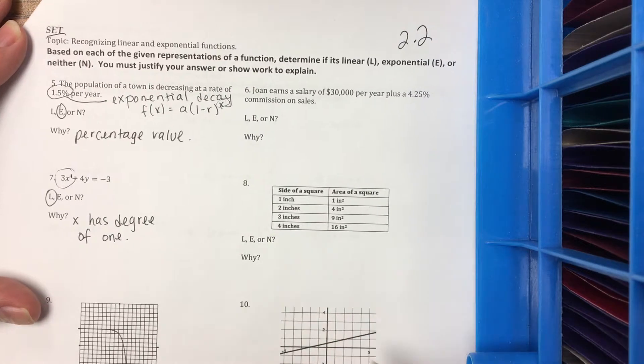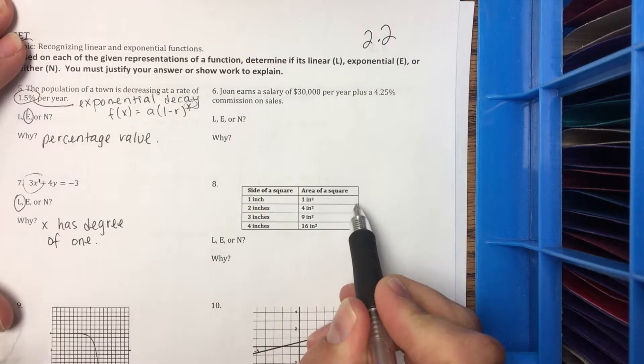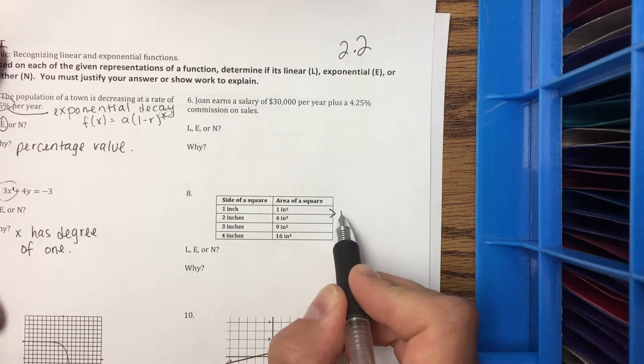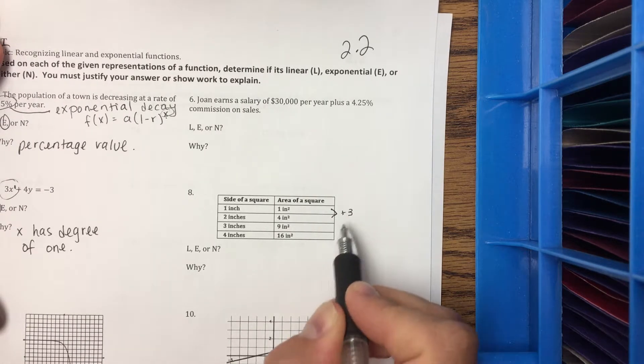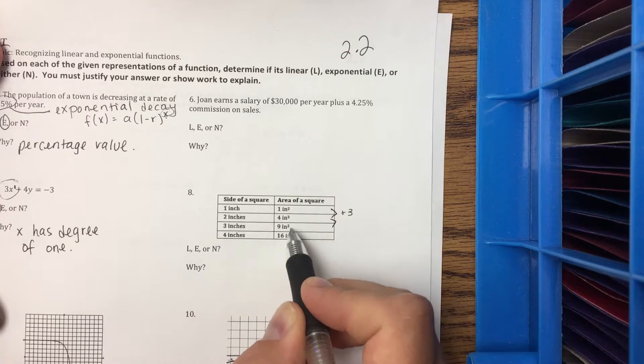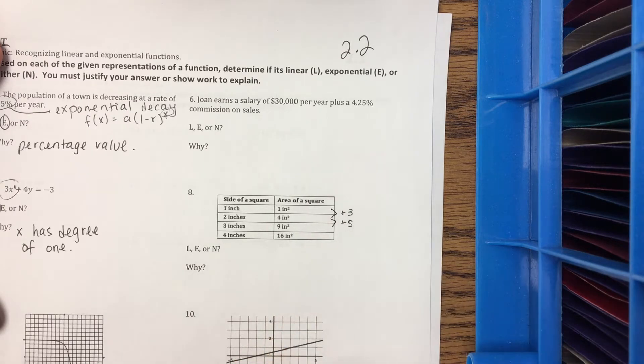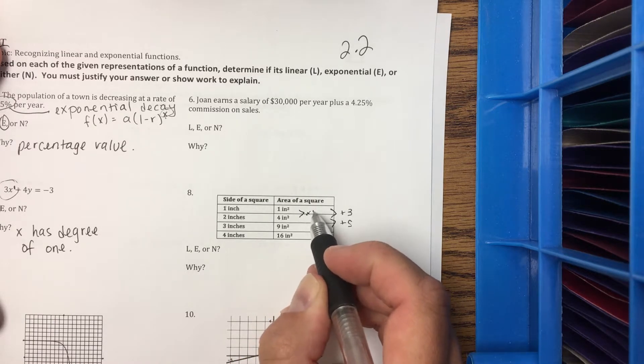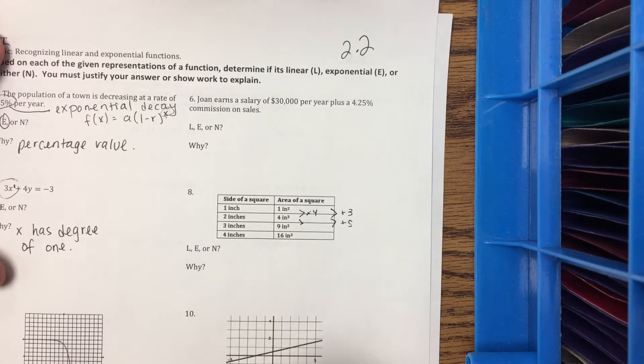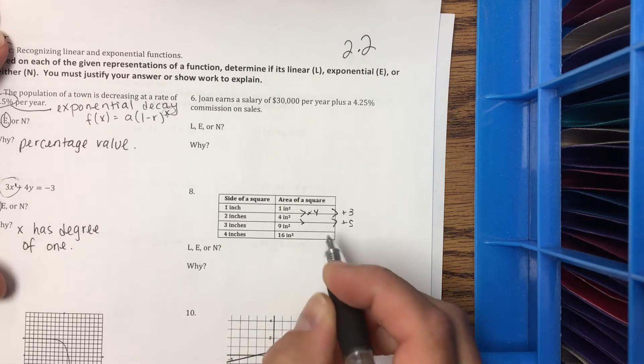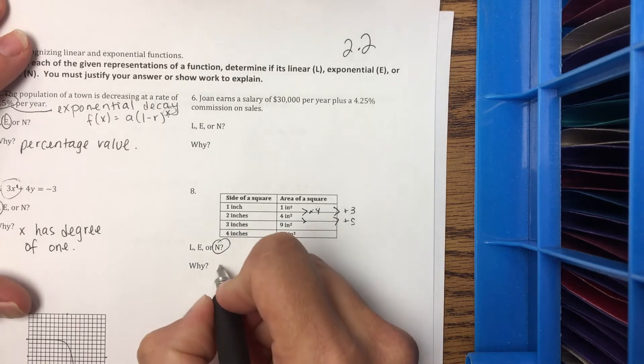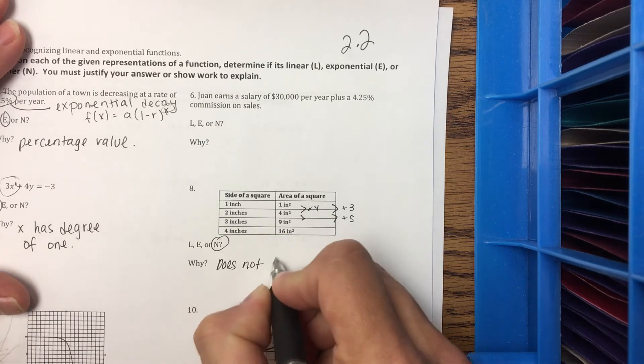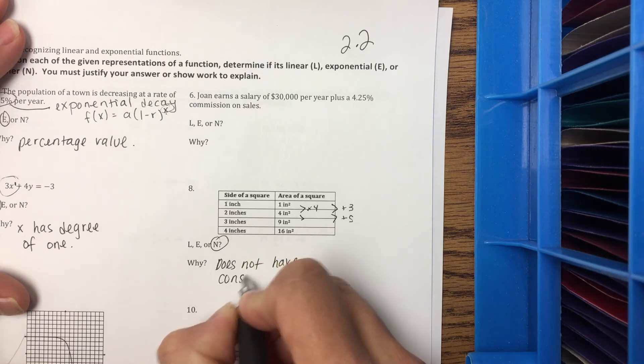Number 8, let's look. Let's see if we can find the constant growth rate. So this one, we are adding 3, or timesing by 4. If I add 3 again, I should have 7. But that's actually a difference of 5. And if we were to multiply those, that would be times 4. And I don't even know what you would multiply 4 by to get 9. So this one is neither. So we do not have constant growth rate.